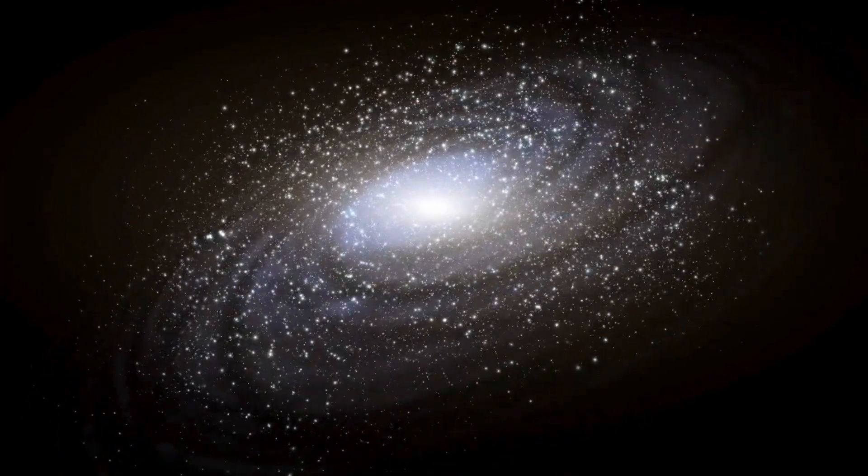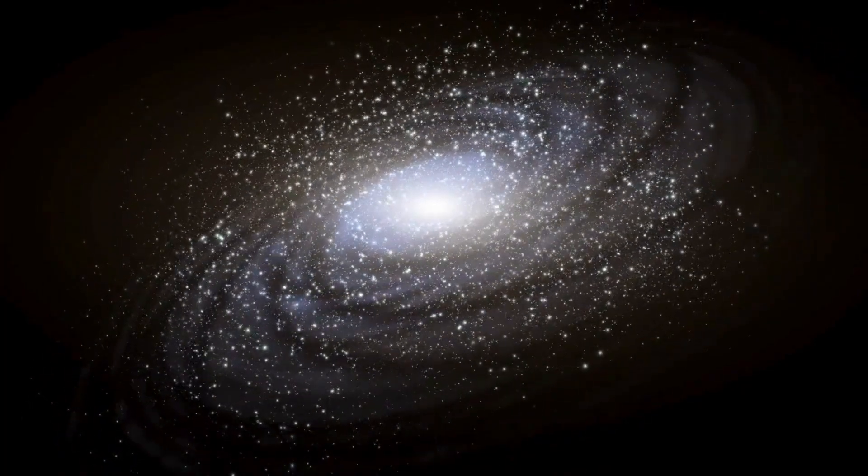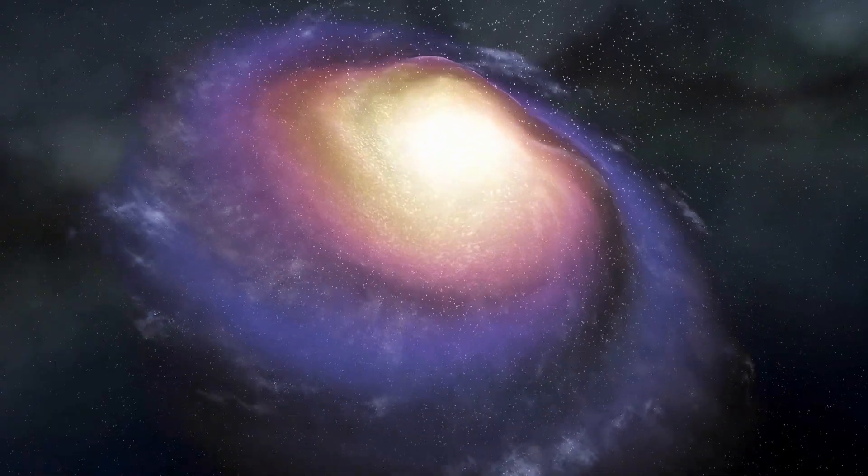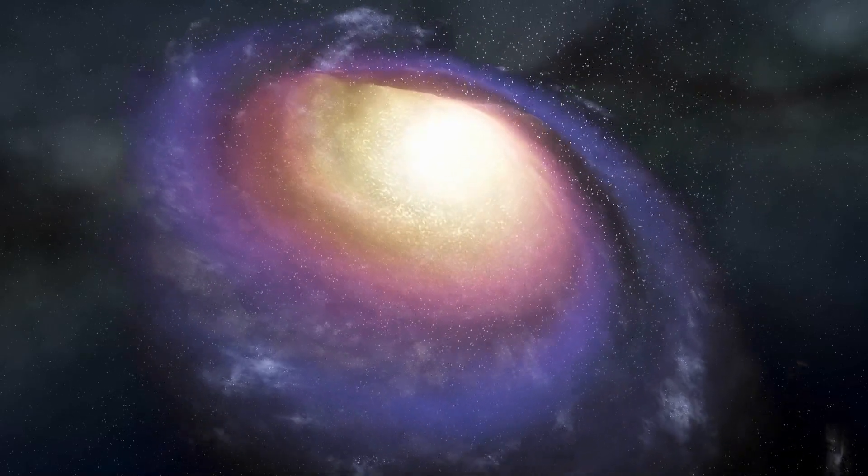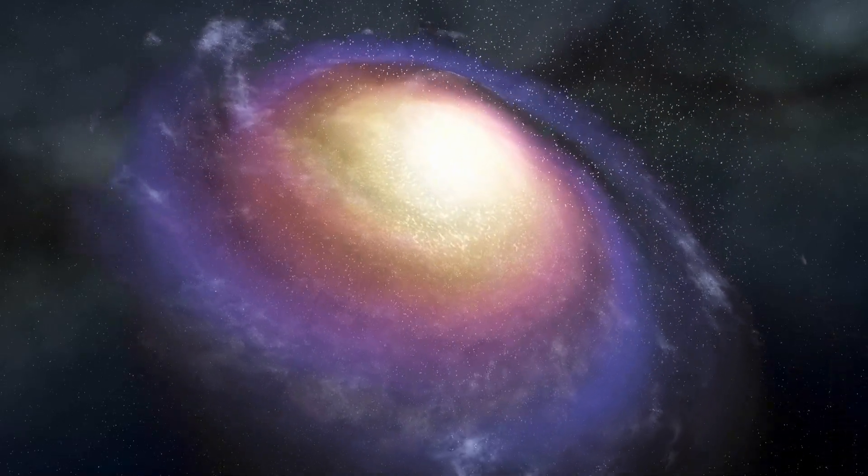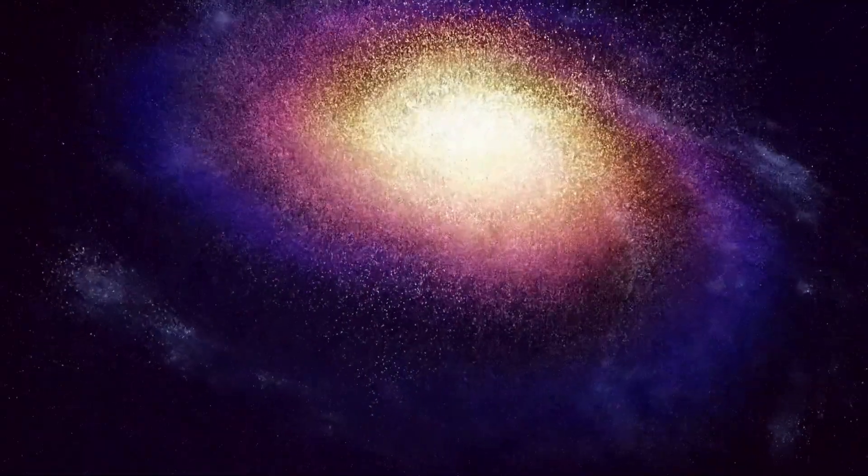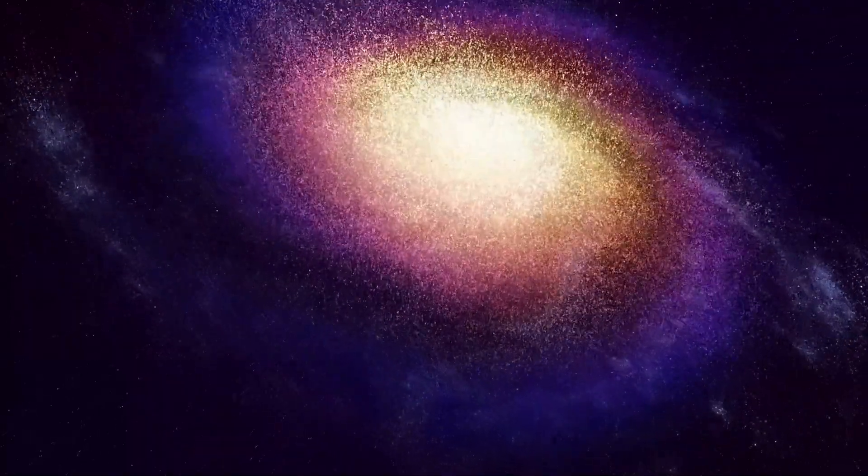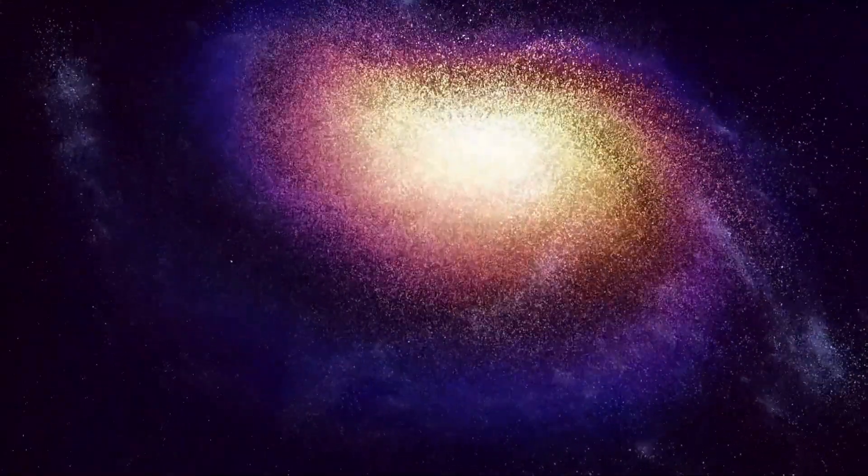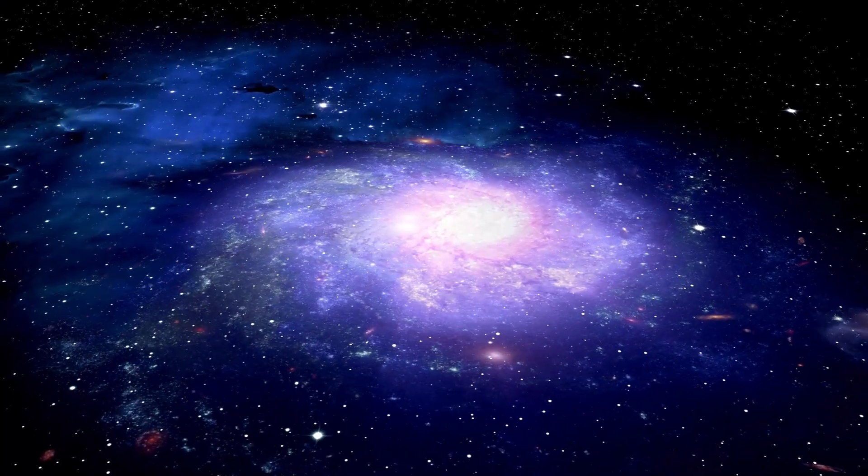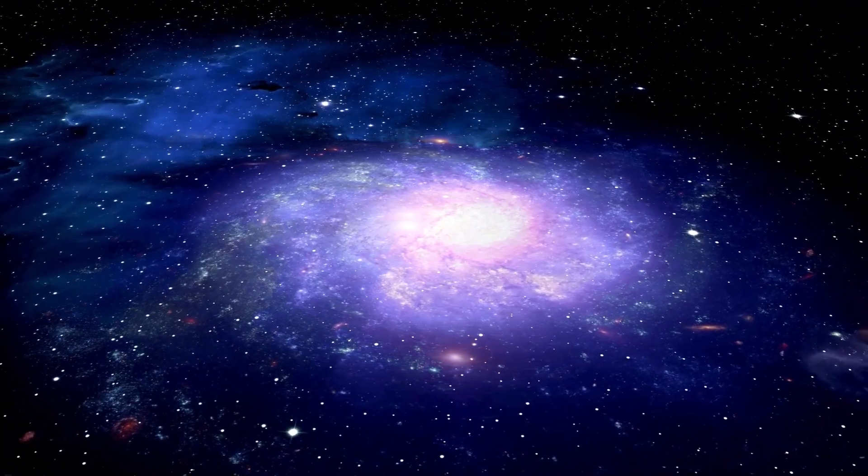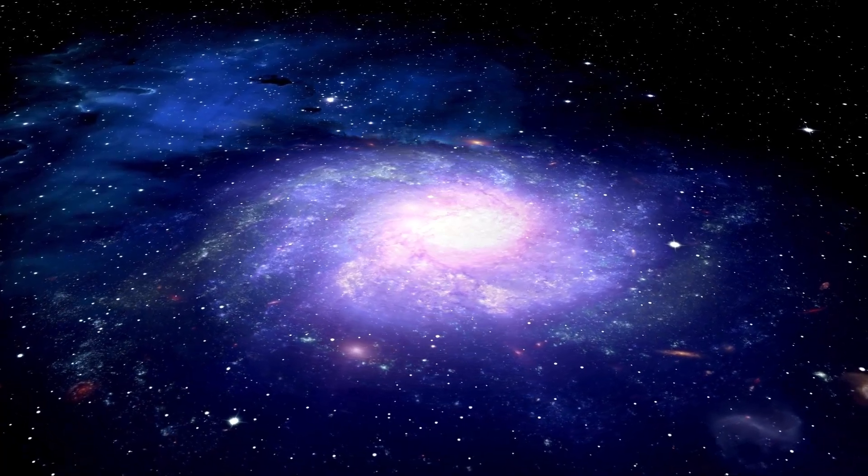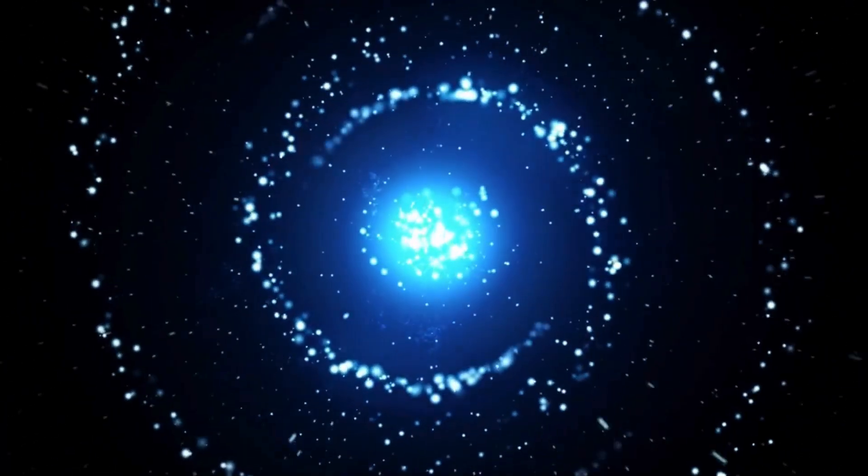While Proxima B is tantalizing, its environment is fundamentally shaped by the characteristics of its star. Proxima Centauri, a red dwarf, is not only smaller and cooler than the Sun, but also significantly more active. This means its habitable zone is extremely close, resulting in the planet's tight orbit and constant exposure to flare activity. These solar flares, far more frequent and forceful than those from our Sun, generate streams of high-energy particles that bombard Proxima B.